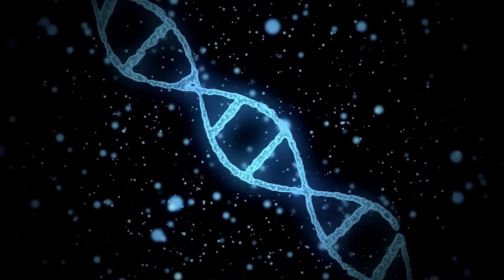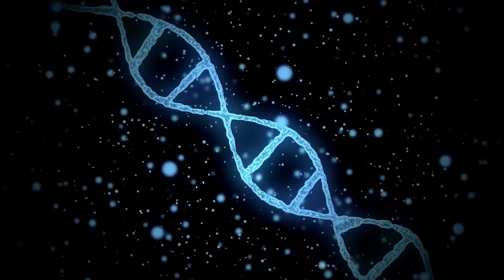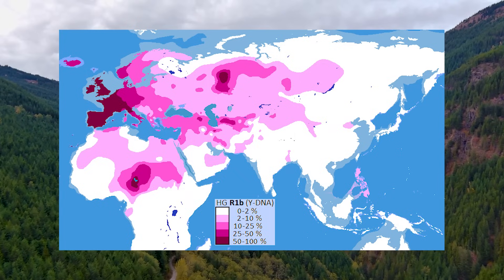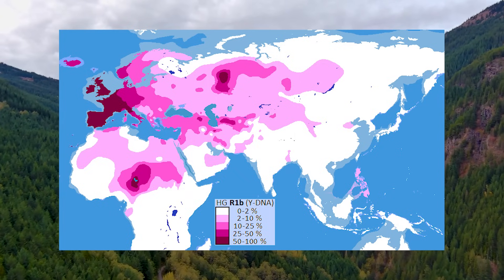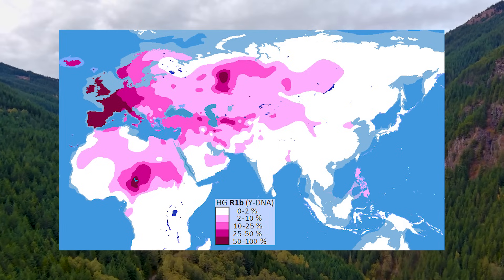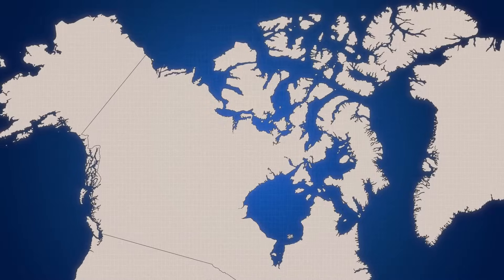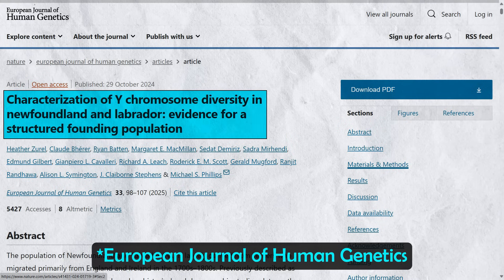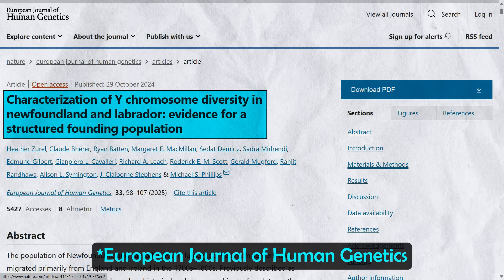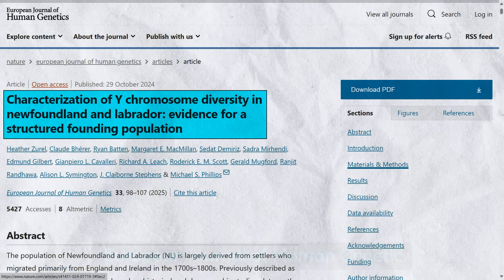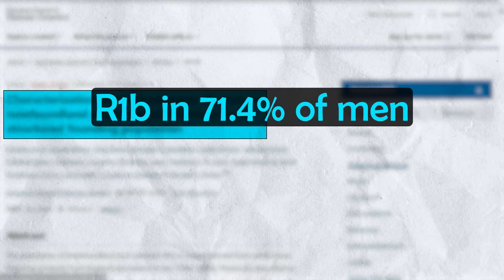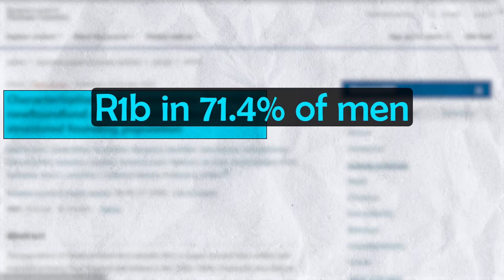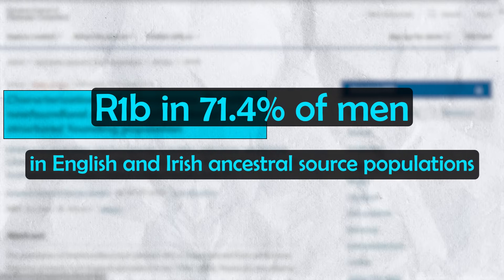As far as haplogroups go, the most common Y-DNA marker in the country is R1B, at around 45% of the population, mainly associated with British, Irish, and French ancestry tracing back to the early colonial migrations. It is higher in certain parts of Canada though. A 2025 study published in Nature analysed over 1,000 people from Newfoundland and Labrador, the easternmost province of Canada, and found R1B in 71.4% of men, primarily resembling those observed in English and Irish ancestral source populations.